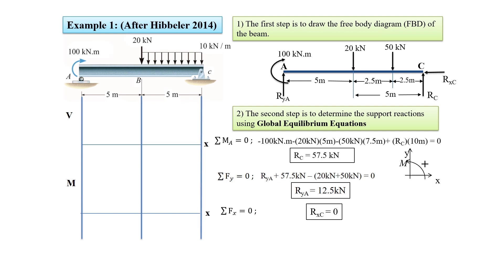Now we can start drawing the shear force diagram V versus X. At point A the shear force is positive 12.5 kilonewtons, so we start from zero and go up to positive 12.5 kilonewtons. It remains constant to point B because there are no loads between A and B. At point B we have a concentrated force of negative 20 kilonewtons, so the shear force decreases to negative 7.5 kilonewtons (12.5 minus 20). The reaction force at point C is 57.5 kilonewtons. Since there is uniform loading between B and C, the shear diagram is linear with a constant slope down to negative 57.5 kilonewtons.